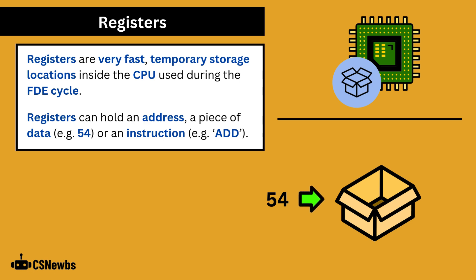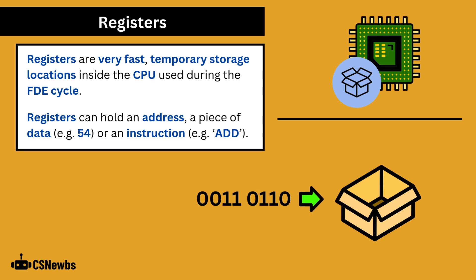Just a note that all data in the CPU uses machine code, which is binary — zeros and ones. So 54 would be in binary: 00110110. That's the same for instructions, and we'll look into more detail about that in the assembly language topic in section 2.4.